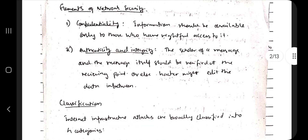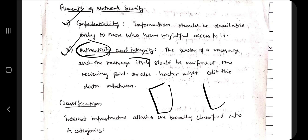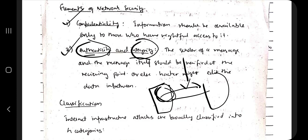Coming to elements of network security, there are two elements. Confidentiality means whatever data is transferred is accessible only to the owners of the data. The second one is authenticity and integrity. Authenticity means who is transferring the data — the hacker should not be able to get the data in between. Integrity means whatever data is being transferred should be transferred as-is and not lost in between.